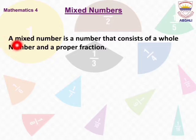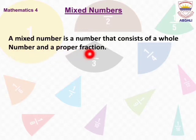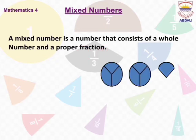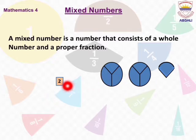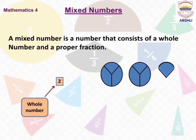A mixed number is a number that consists of a whole number and a proper fraction. In these 3 circles, 2 circles are fully colored and divided into 2 parts. We write 2 as the whole number, because 2 circles are fully colored.